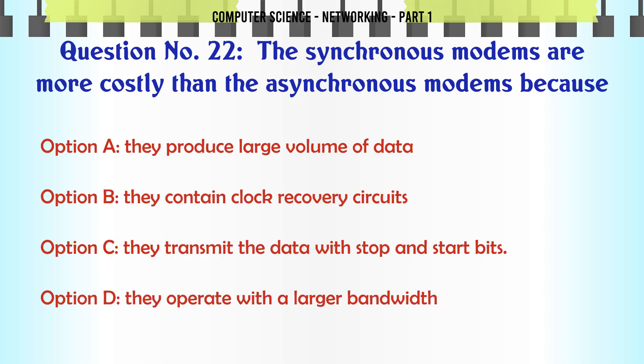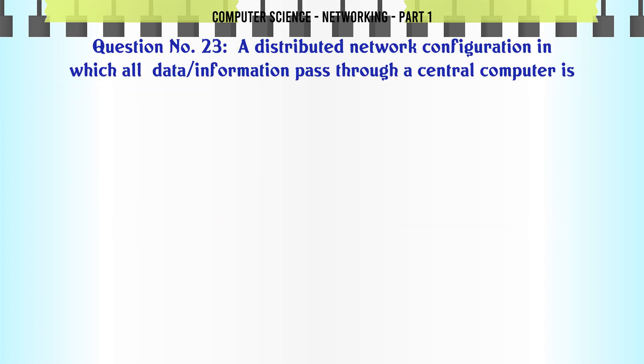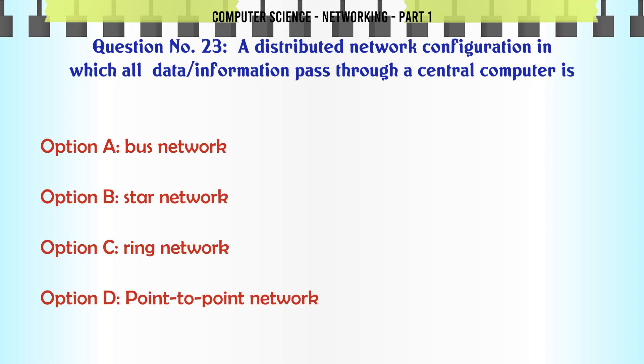The synchronous modems are more costly than the asynchronous modems because: A. They produce large volume of data. B. They contain clock recovery circuits. C. They transmit the data with stop and start bits. D. They operate with a larger bandwidth. The correct answer is: They contain clock recovery circuits.